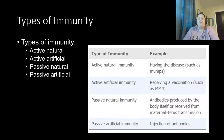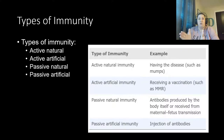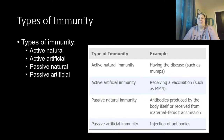Active artificial immunity is where your body still actively fights and creates memory cells, but you received the exposure artificially — this is what we see with vaccines. Like the MMR vaccine: you receive the vaccine, your body recognizes it as foreign, creates a response to protect you, so you still have protection but received it artificially through a shot.